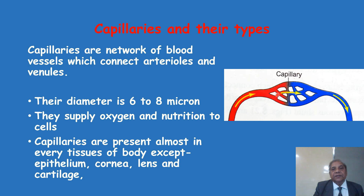As shown in this diagram, from the arteriole — the red color blood vessel — it breaks up into capillaries, which are a network of smaller blood vessels that inter-anastomose and join with each other. The other end of the capillaries becomes the venule, or the beginning of the vein. At the arterial end, exchange takes place between the blood vessels of the capillaries and the surrounding tissue, and it becomes venous blood rich in carbon dioxide, shown here in blue color.